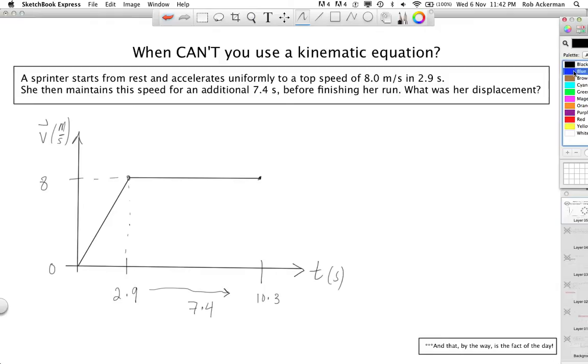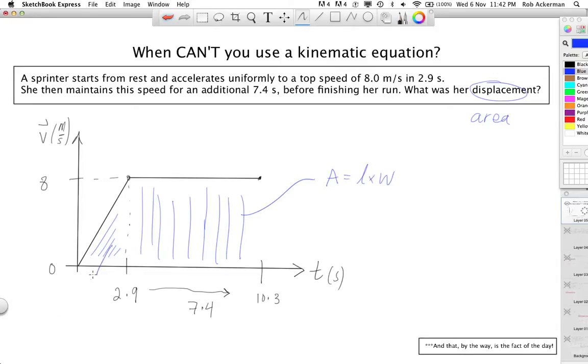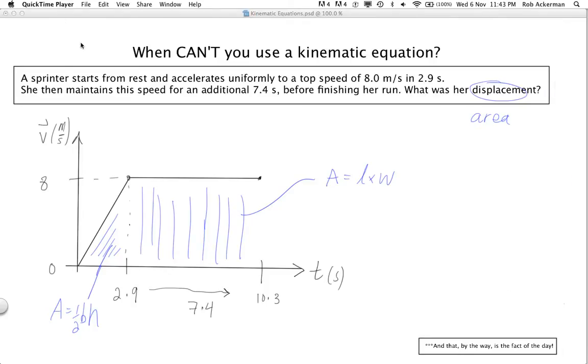Now, if I gave you this problem one or two lessons ago, what would you do? You would draw a VT graph, and you'd find the displacement by using an area idea. You'd say, here's area number one, it's a triangle, and here's area number two, it is a rectangle. Take a moment, pause the video, and see if you can calculate the area of the rectangle, and see if you can calculate the area of the triangle. Do that now. Okay, thanks folks. I just did the calculation here. The area down here that I got was 11.6, using a half base times height. The area that I got in here, using the length here times the width there, is 59.2. I add them up, I get this number.